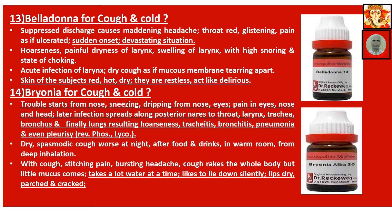Belladonna for cough and cold: surprise discharge causes maddening headache. Throat red and glistening. Pain as if ulcerated. Sudden onset, devastating situation — Belladonna is always sudden onset and the onset is like a serious storm. Hoarseness. Painful dryness of the larynx. Swelling of the larynx with high snoring and choking of breathing. Acute infection of the larynx. Dry cough as if the mucous membrane is tearing apart. Skin of the subject red and dry. They are restless and act like delirious — this is a general symptom.